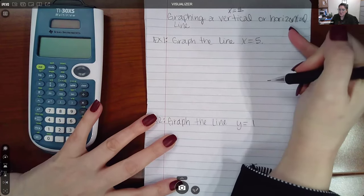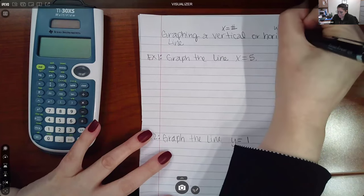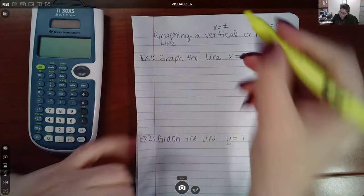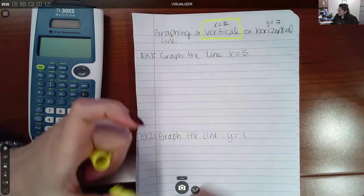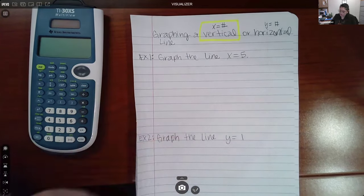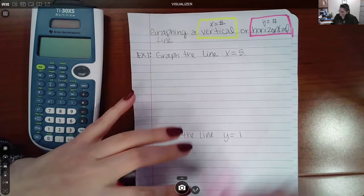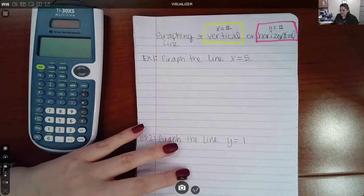And a horizontal line will always be of the form Y equals a number. So these are two important facts that you have to know. Otherwise, you will not be able to draw these things. So these are two very important bits of information.